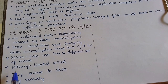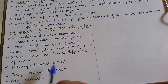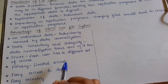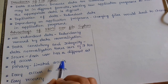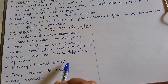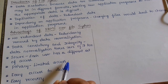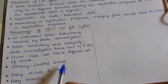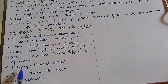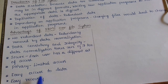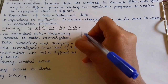The next point is privacy. Privacy means limited access, and this can be controlled by access specifiers — for example, read-only or write-only access. By giving access specifiers, we can achieve privacy. Next is easy access: access to data and easy recovery will be available.